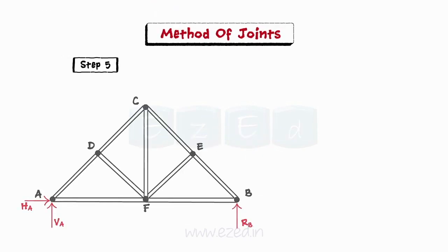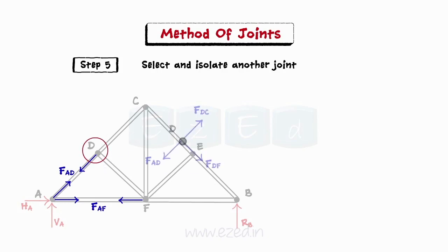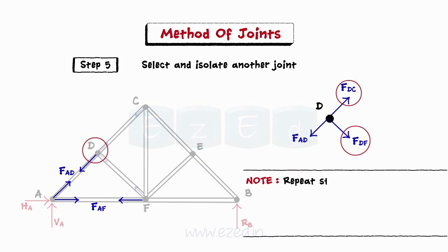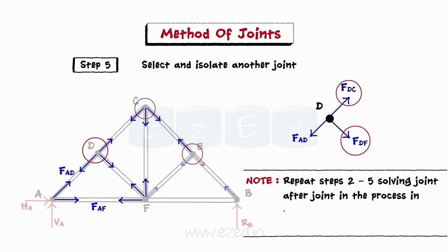Step 5: Mark the magnitude and nature of the forces calculated on the parent truss. Then select and isolate another joint having only two members with unknown forces. Note that we will repeat steps 2 to 5, solving joint after joint in this process, in order to find forces in all members of the truss.